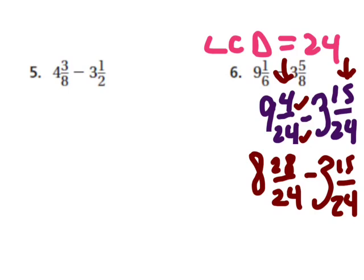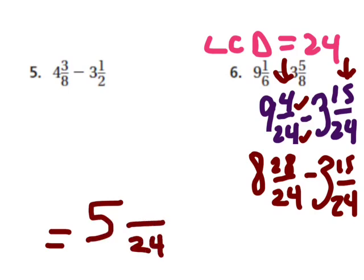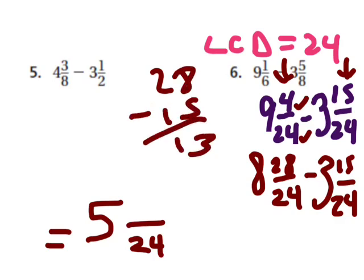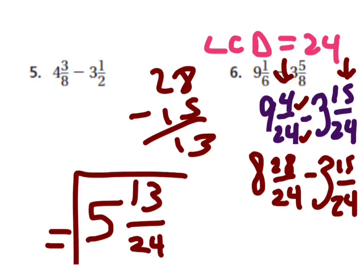Eight minus three is five, and twenty-eight minus fifteen is thirteen, with a denominator of twenty-four. So my answer is five and thirteen twenty-fourths.